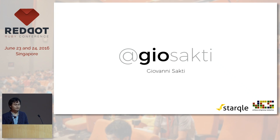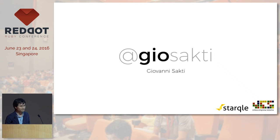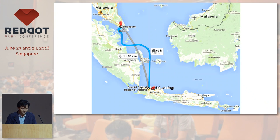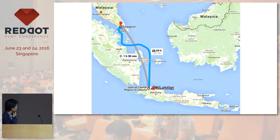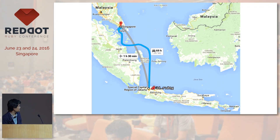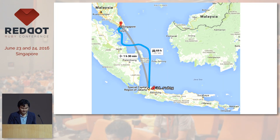Currently I'm associated with two different companies, but we're doing mostly enterprise development for our clients in Indonesia. I'm from Jakarta, Indonesia — it's about an hour and 30 minutes from Jakarta to Singapore. We also have a local Ruby community called idruby here in Jakarta, and I also help organize there.